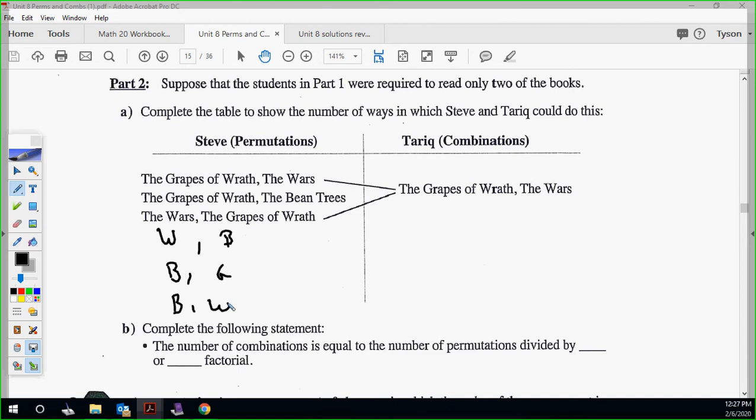For Tariq, the combination, you have Grapes of Wrath and the Wars, Grapes of Wrath and the Bean Trees, and Bean Trees and the Wars. So there's only three combinations of two. If you intermix them, like W, B and B, W, that is one combination. That's being double counted in Tariq's situation because the order doesn't matter. But the order does matter for Steve because he has a restriction on when he can check things out.